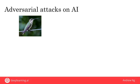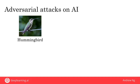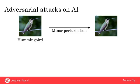Let's say you give an AI system this picture of a bird and ask it to classify. The AI system outputs that this is a hummingbird. But if we make a minor perturbation to this image — changing the pixel values just a little bit, an almost imperceptible change to most people — the same AI system then says this is instead a hammer.